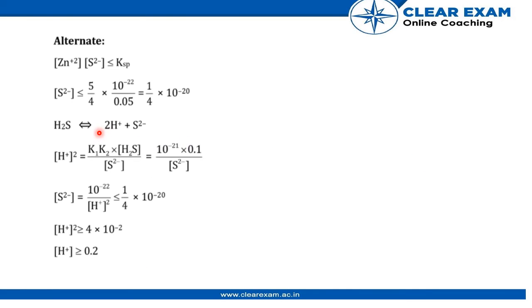Or we can do it another way: [Zn²⁺][S²⁻] < Ksp. By solving the values, we get [S²⁻] = 10⁻²² divided by [H⁺]² is less than or equal to 1/4 × 10⁻²⁰, which gives [H⁺] is greater than or equal to 0.2.